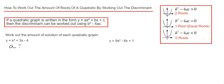a is the number before x squared which is 1, b is the number before x which is 3, and c is the number at the end.